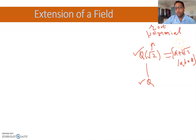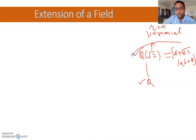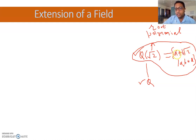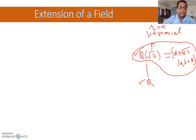यह definition कोई cramming नहीं है। इस topic के end तक आपको पता लग जाएगा कि how to construct this type of set — यह एक criteria है जिस criteria की help से हम इसको construct कर सकते हैं। तो इस type के fields कैसे construct करने हैं वो इस topic के end तक clear हो जाएगा। Adjunction of Roots का पहला subtopic है: Extension of a Field।